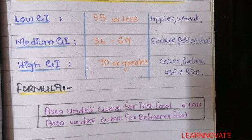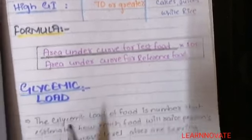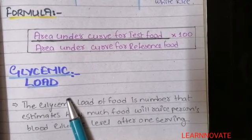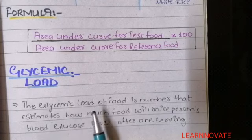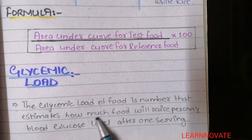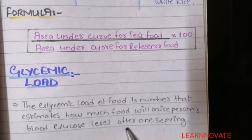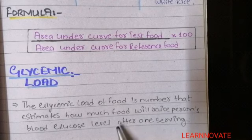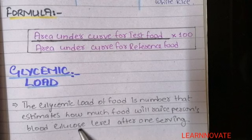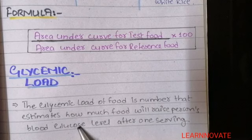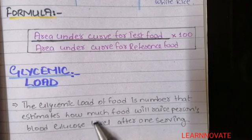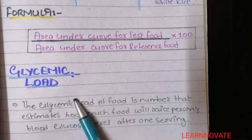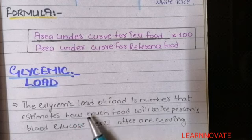Another term mostly asked and used alongside glycemic index is glycemic load. The glycemic load of a food is a number that estimates how much a food will raise a person's blood glucose level after one serving. It is not the rank of a carbohydrate, but the number given to a carbohydrate indicating how much it raises blood glucose after one serving. For example, one serving of rice — how much will it increase your blood sugar level — that is calculated by glycemic load, per serving.